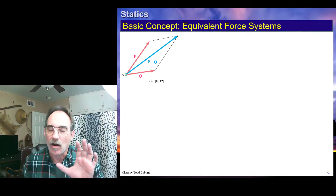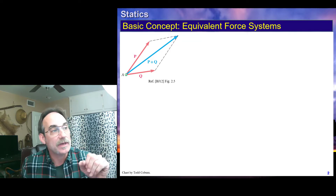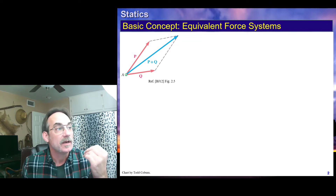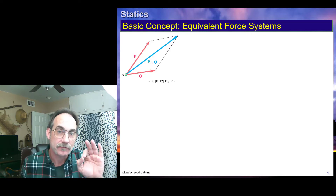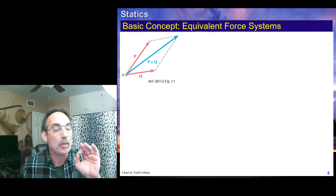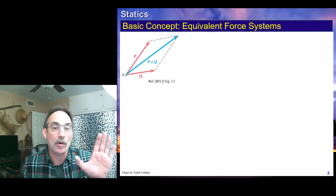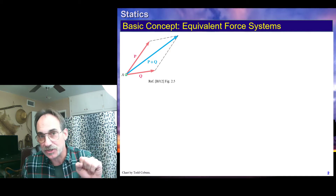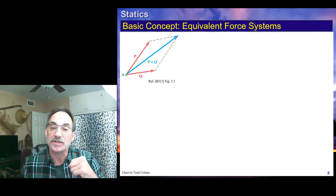To set our minds to the same level, let's think back. We started out dealing with problems like this — we were given two forces, P and Q, and we were looking for the resultant. What we did was take P and Q, use vector addition, and come up with an equivalent force system, which was the new vector P plus Q. We don't have both P and Q and P plus Q — we either have P and Q or we have P plus Q. This is an equivalent force system.